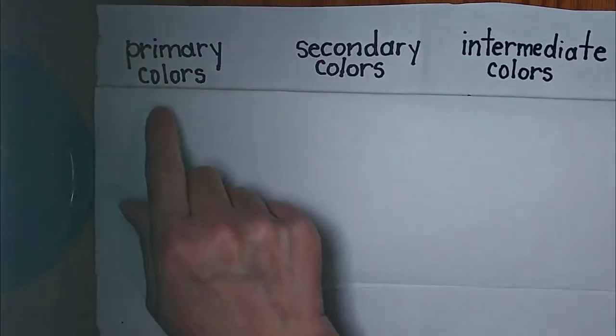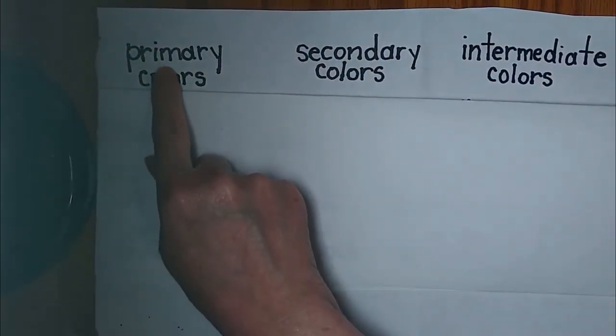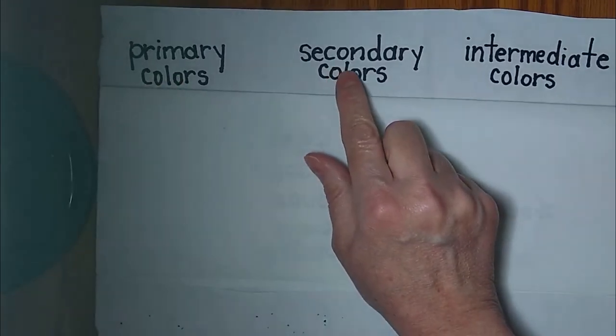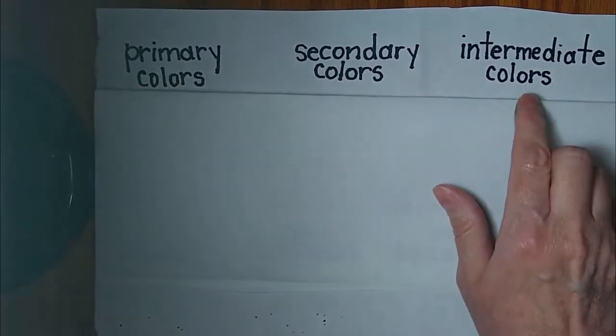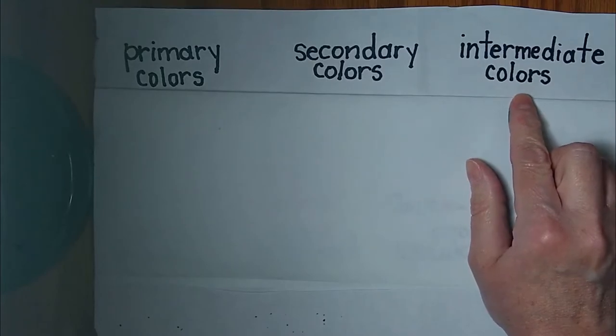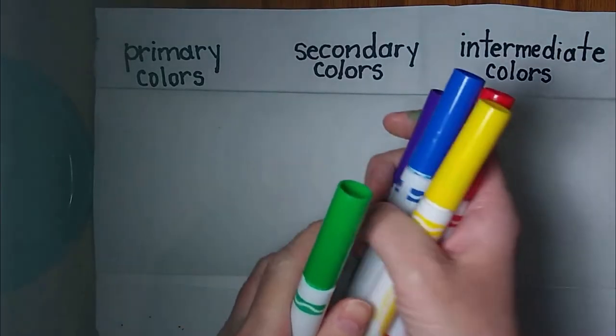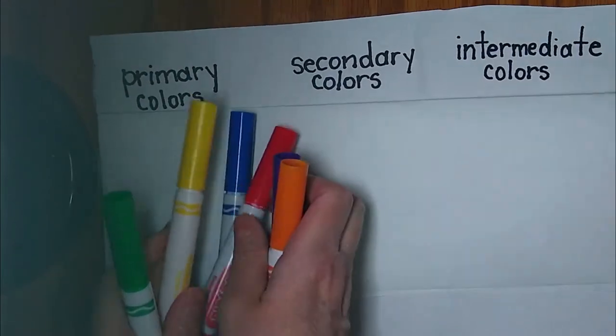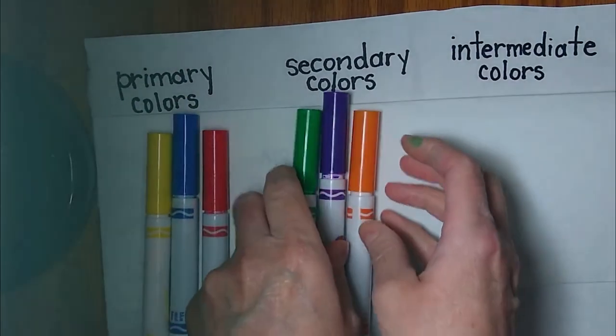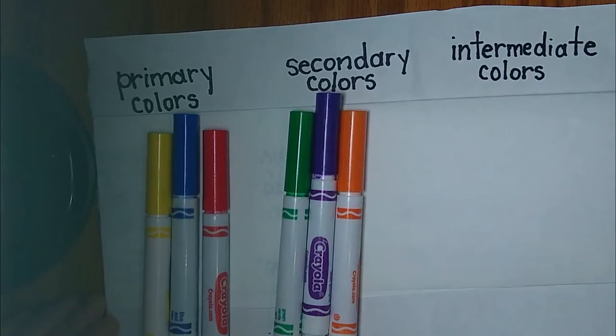Okay guys, grab a piece of paper and I want you to make three columns. The first column will say primary colors, the second column will say secondary colors, and then the third column will say intermediate colors. You're going to need the primary colors and the secondary colors to do this activity.